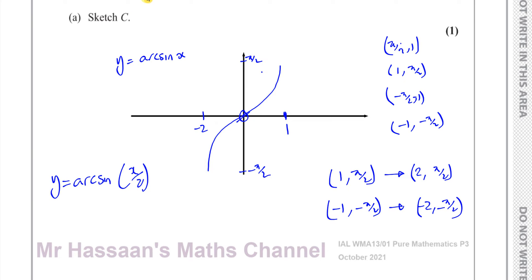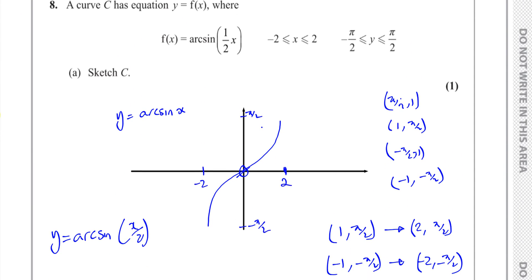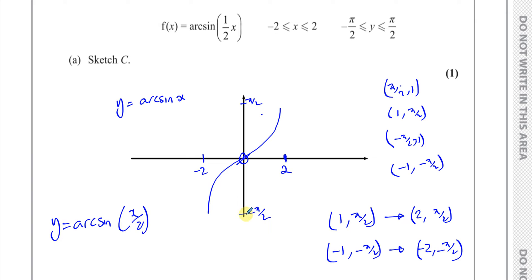So this is the sketch of the graph now. As you can see, it lies between x = minus 2 and x = 2, and between y = minus pi over 2 and y = pi over 2. That's the sketch of y equals arc sine of x over 2, or arc sine of half x.